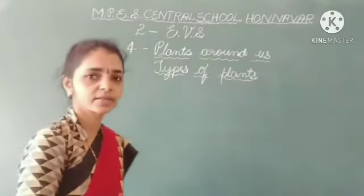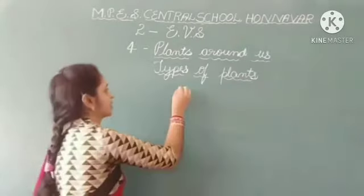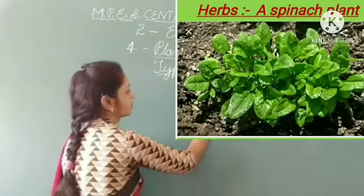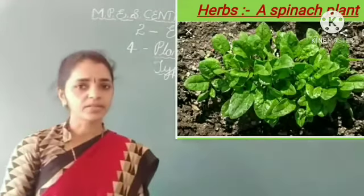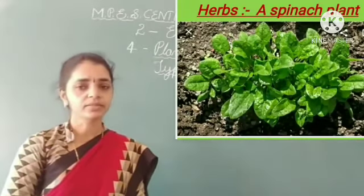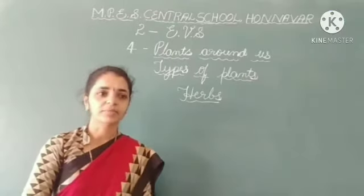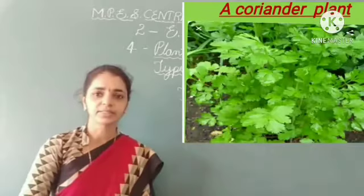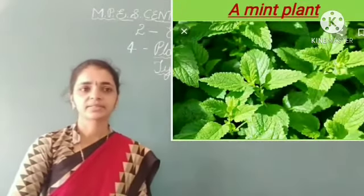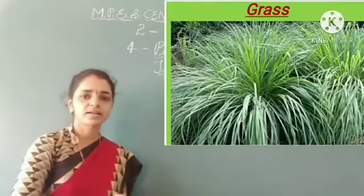Have you seen herbs? Let us learn about herbs. Herbs are very small plants with soft green stems. For example, a coriander plant, a mint plant, a spinach plant and grass.